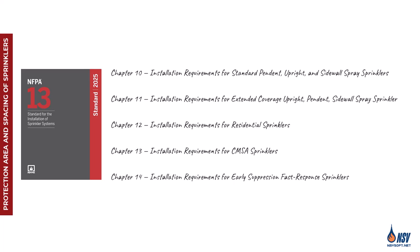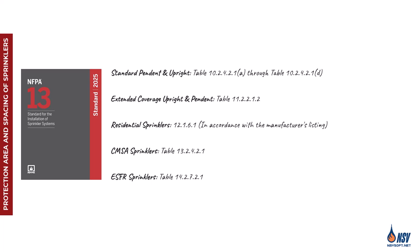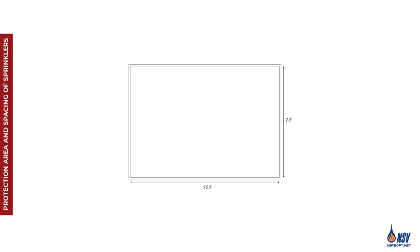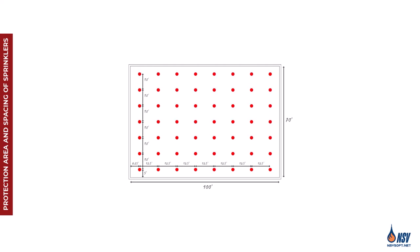The 2025 edition of NFPA 13, chapters 10 through 14, outlines sprinkler coverage and spacing requirements tailored to each sprinkler type. While the standard defines the values, designers often apply them using individual methods. In this video, we'll explore practical techniques for achieving uniform sprinkler placement, focusing specifically on upright and pendant sprinklers.